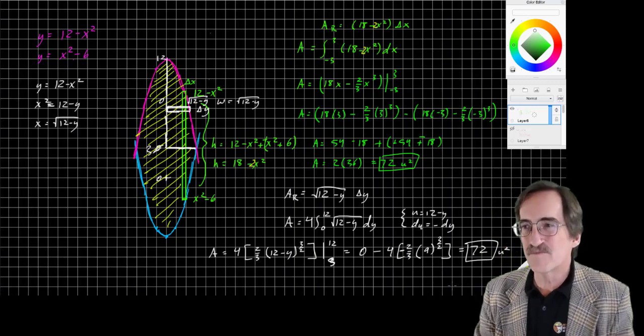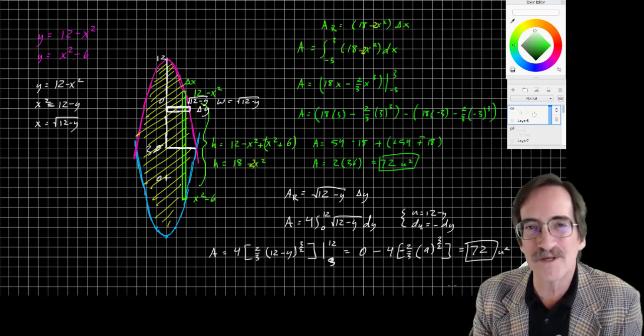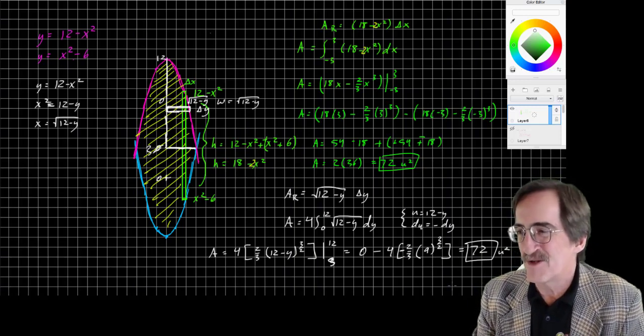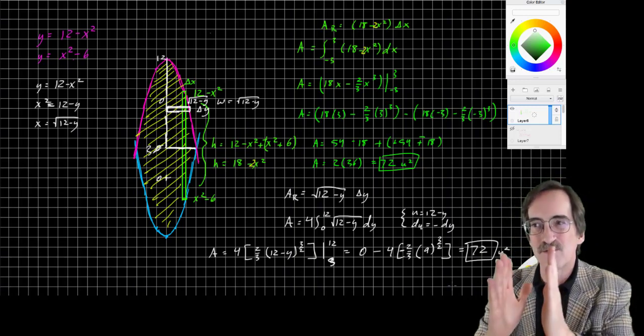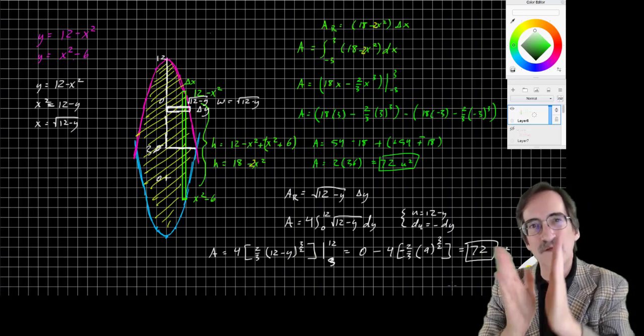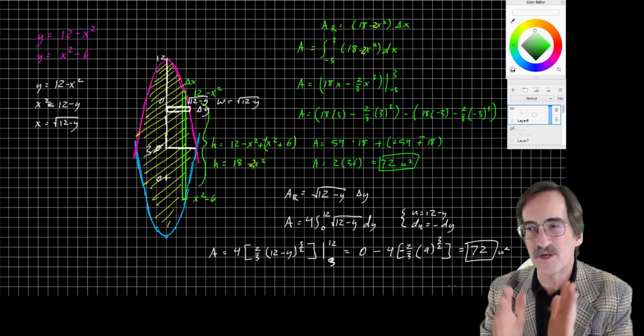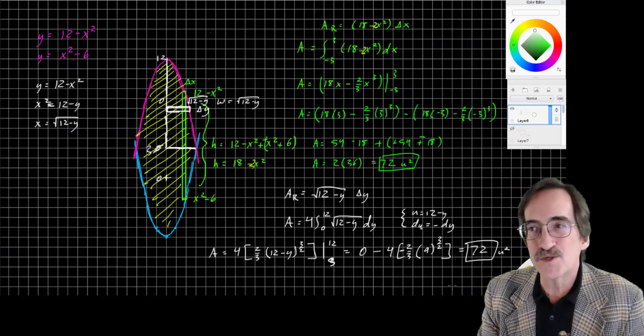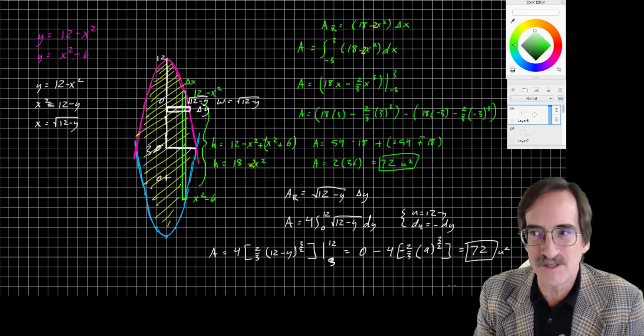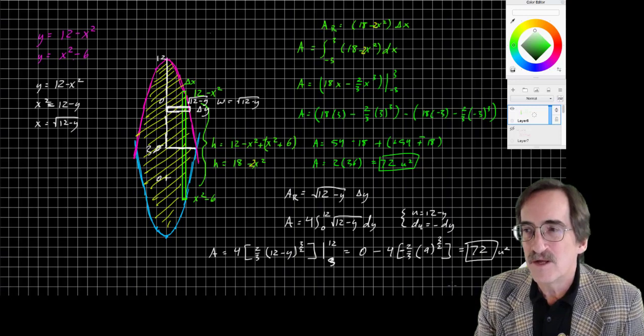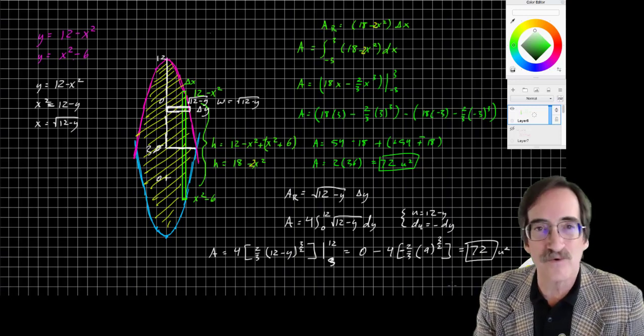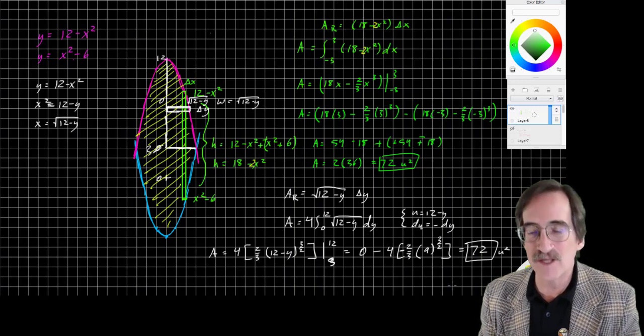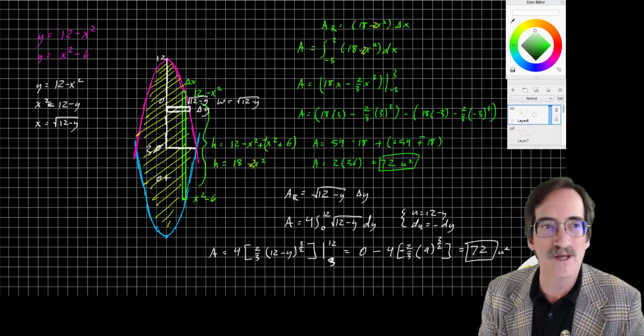So I just wanted to point that out, that there's more than one way to skin a cat, so to speak. You can set up your rectangles vertically or you can set them up horizontally. You can integrate on x or you can integrate on y. And really what you choose depends on the circumstances. Which is easier? In this case, the easiest is a vertical rectangle. But sometimes you're going to find that the nature of the problem lends itself to integrating on y instead of on x.